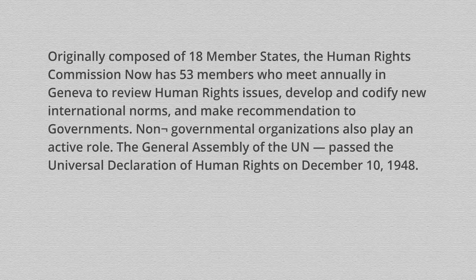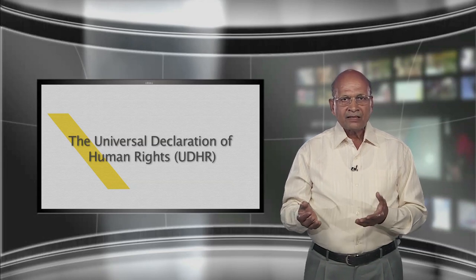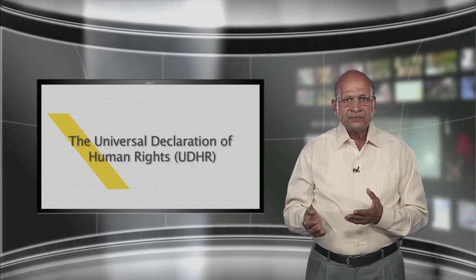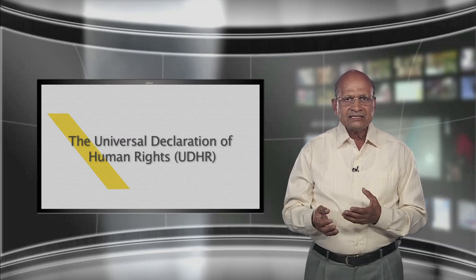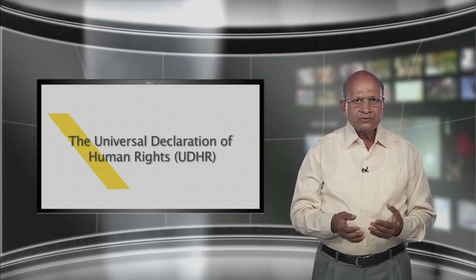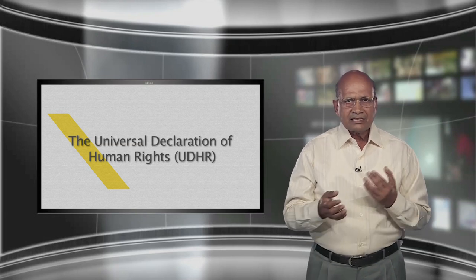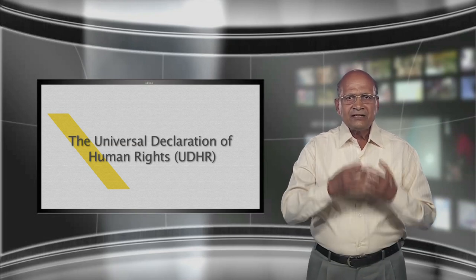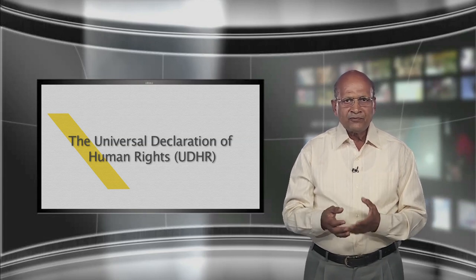Non-governmental organizations also play an active role. The General Assembly of the UN passed the Universal Declaration of Human Rights on December 10, 1948. The first two articles are fundamental principles underlying all human rights. Articles 3 to 21 comprise civil and political rights. Articles 22 to 27 refer to economic, social and cultural rights. The last three articles provide a framework of solidarity safeguarding the universal enjoyment of all human rights.